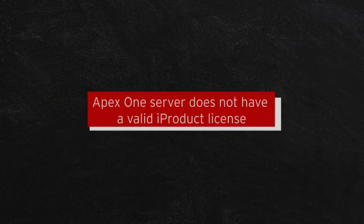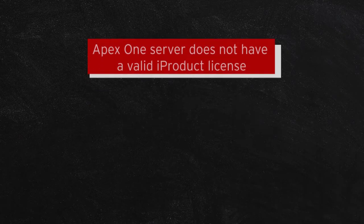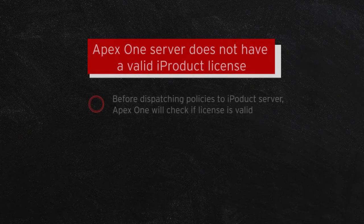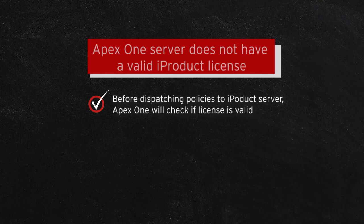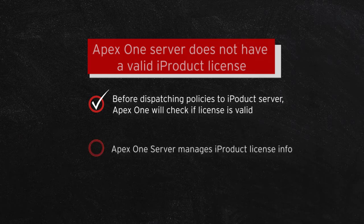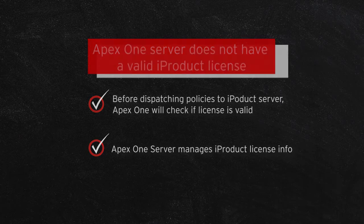On this next case, we'll look at what happens when the Apex One server does not have a valid iProduct license. When there is a policy containing settings to enable iProduct settings, before dispatching the policies to the iProduct servers, the Apex One server will first check to see if there are valid licenses. The iProduct license info is managed by the Apex One server.